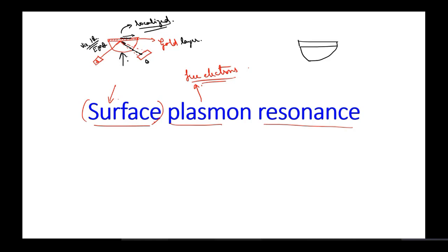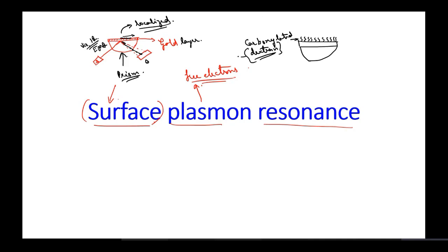We have this arrangement where we have a prism — this hemispherical depiction is basically denoting a prism. Over this gold layer we can attach some carboxylated dextran molecules. In some cases you will find carboxyl-methylated dextran molecules. The main point is that you are attaching a dextran, which is basically a polysaccharide, over the gold surface.